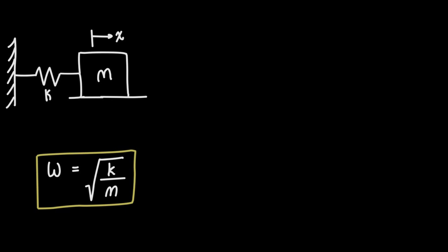Let's back up a little bit and start with just a mass on a spring. In one of our previous videos we showed that you can take the square root of k over m to calculate the angular frequency, where k is the spring constant and m is the mass of the object.